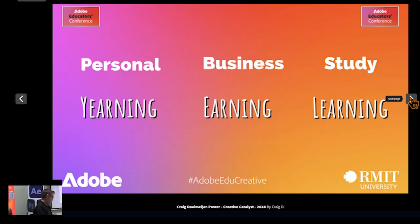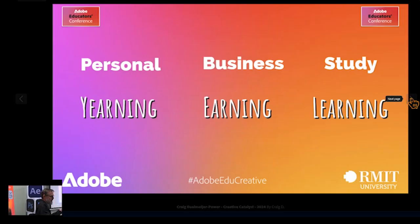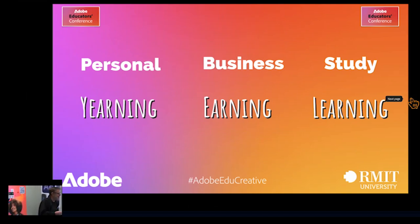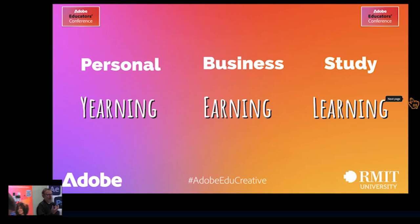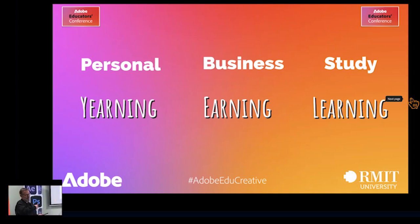Purpose can actually cover three different main areas: personal, business, and study — or what I like to call them: yearning, earning, and learning. A lot of the time we look at earning as the main one, but I believe we've got to yearn and learn to earn.